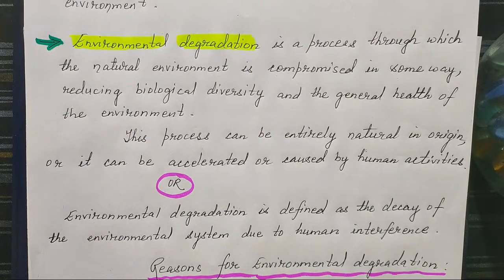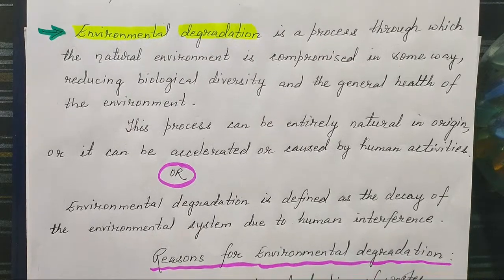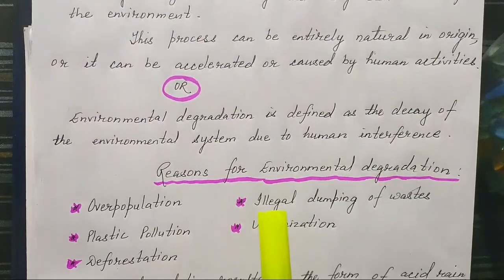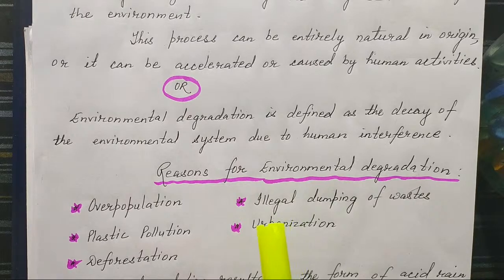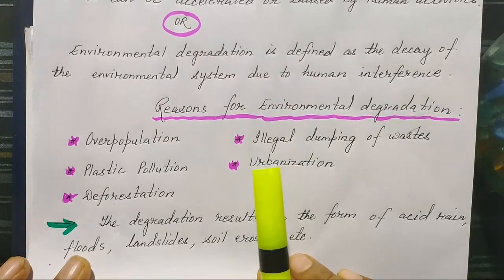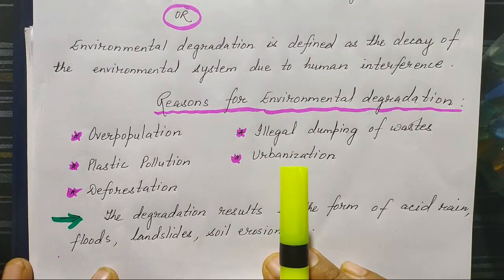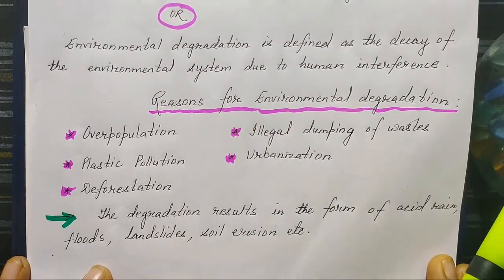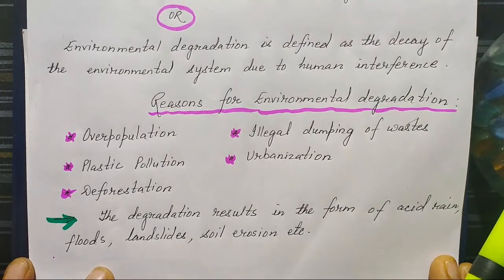We know that human beings are responsible for most of the pollution. In short, environmental degradation can be defined as the decay of the environmental system due to human interference. Now, what are the reasons for environmental degradation? One reason is over-pollution and overpopulation — the explosion of the population.